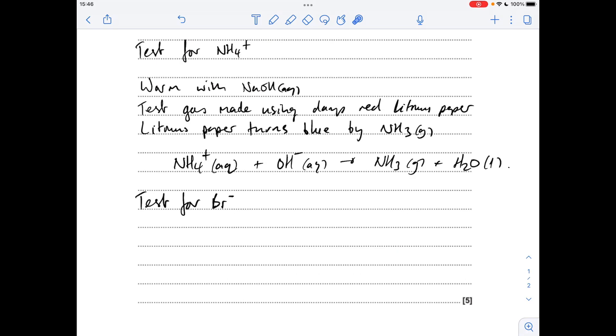Moving on to the test for the bromide ion. At the start of the question, we were told that it was ammonium bromide, so we know that a bromide ion is present. We don't really need to add the nitric acid to remove any suspected carbonate ions—we're assuming it's just pure ammonium bromide here.